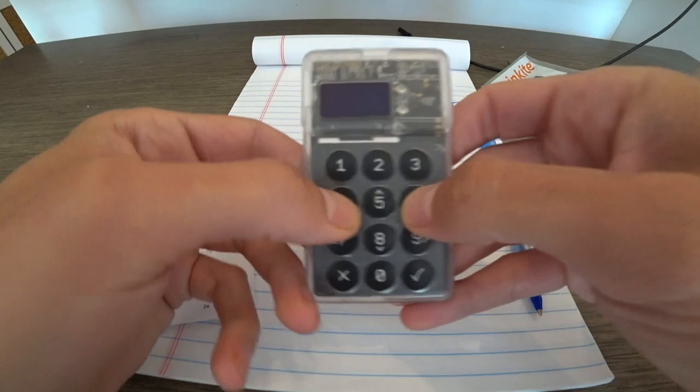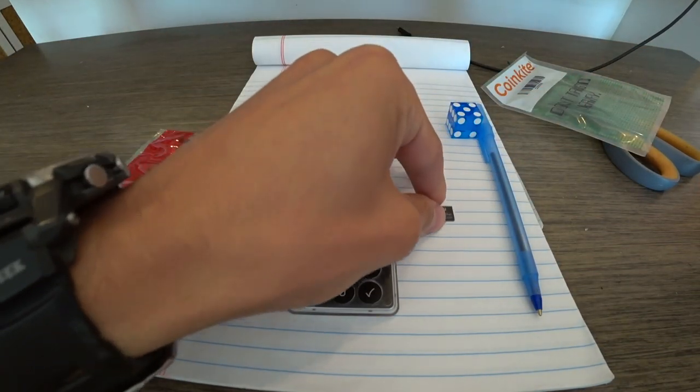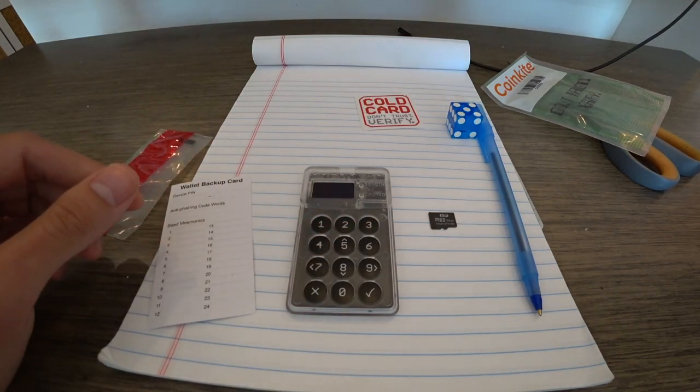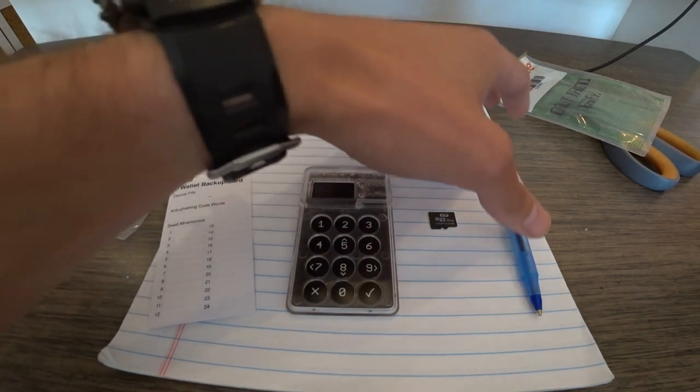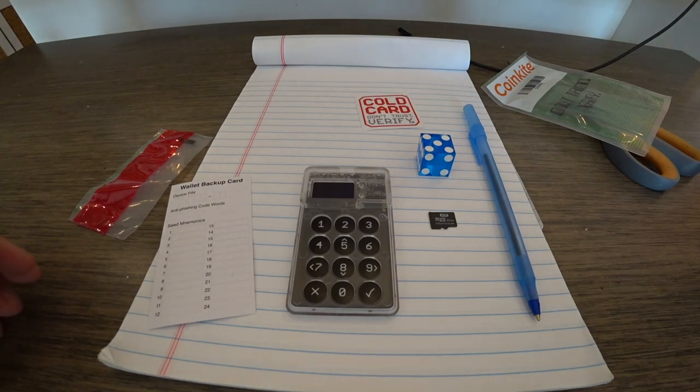This is the newer version so it's got these nice clicky buttons which is awesome. Then also we have a micro SD card which you can either get from them or get a separate SD card. Got my dice and I got my pen. This is everything you need along with computer running Wasabi. Okay so let's get started.